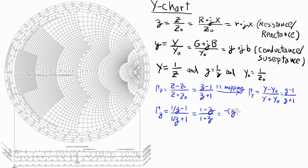That is equal to minus z minus 1, or minus z minus 1 divided by little z plus 1. And that turns out to be equal to the negative of gamma z.